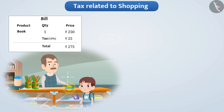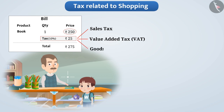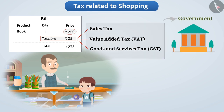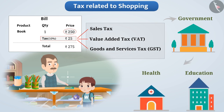Now let's learn about tax related to shopping. When you look at a shopping bill, you may find that some additional value along with the item's price is charged as tax — such as sales tax, value added tax, or goods and services tax (GST). This tax is paid to the government, which spends it on facilities like health and education. Most taxes are represented as percentages.